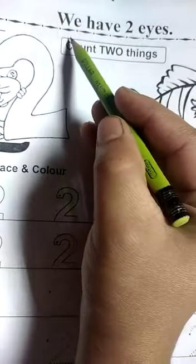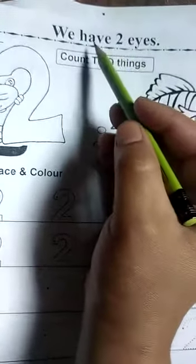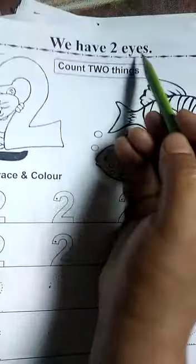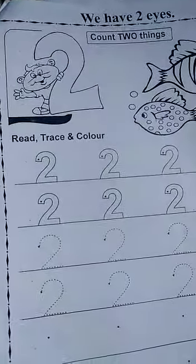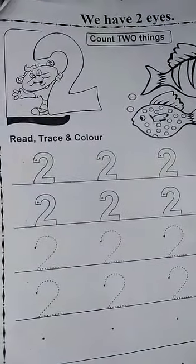Look at here. We have two eyes. Say with me, we have two eyes. Touch your eyes. Touch your two eyes. Good.